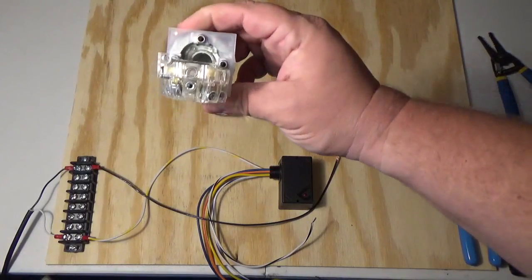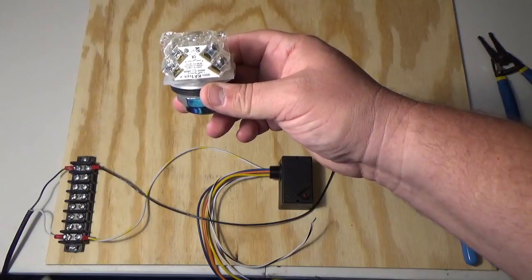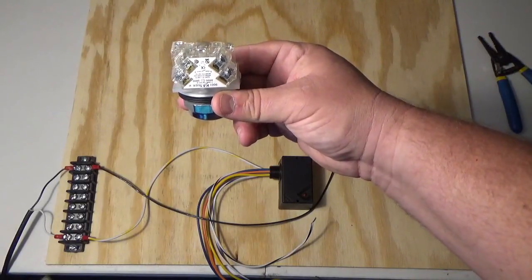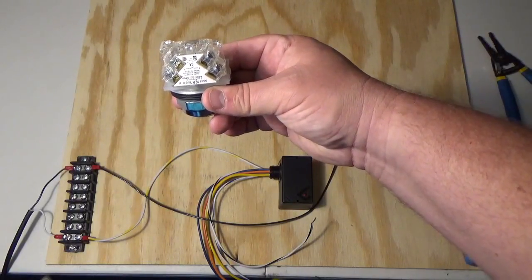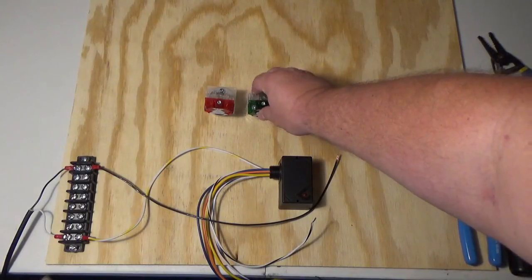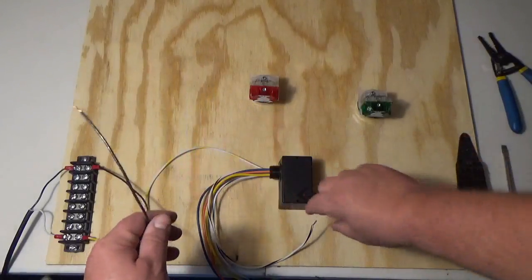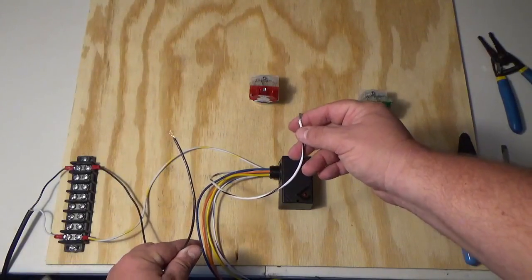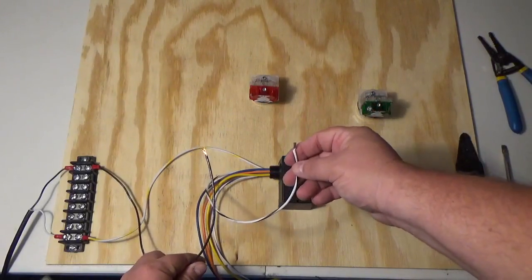I also have another push button that's clear. This style happens to be clear, sometimes they come in black. You have two sets of contacts, so this is a combination normally open and normally closed. When we push the button, it's in a normally closed state, but as soon as I push the button it opens and then we make contact and it closes the other. I have 120 volts here and my other end of my coil is here. I'm going to connect these two wires to a normally closed switch so you can see what happens.